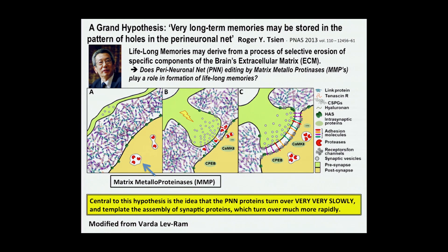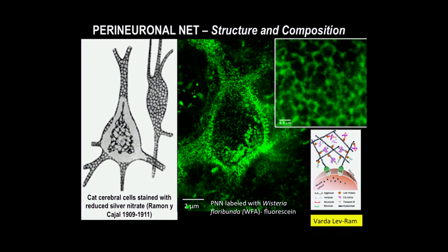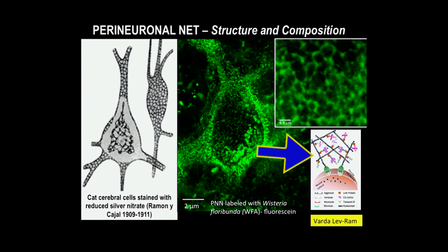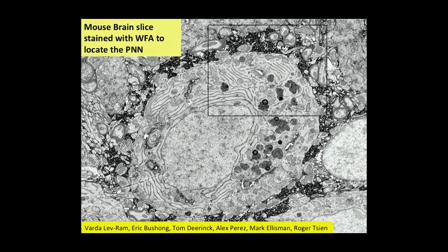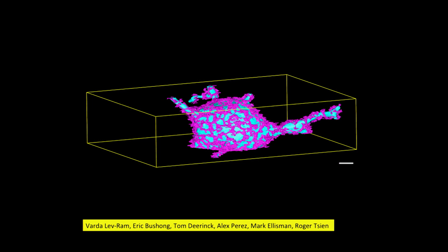The perineuronal net had been described by Cajal and others. This is what it looks like in light microscopy with wisteria floribunda as a fluorescent stain, and these are some of the molecules known to be associated with it — you can use proteomics to look at that. You can stain this the same way by doing a peroxidase reaction to mark that material in the extracellular space, reconstruct it by the methods I showed you, and see what it looks like. The synapses are in these holes. And then the question is, does it stay around?